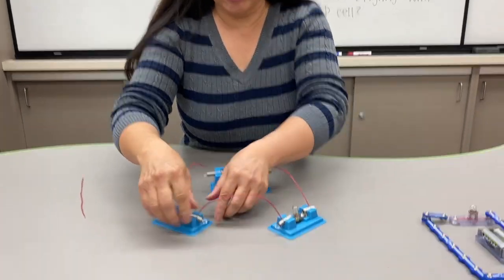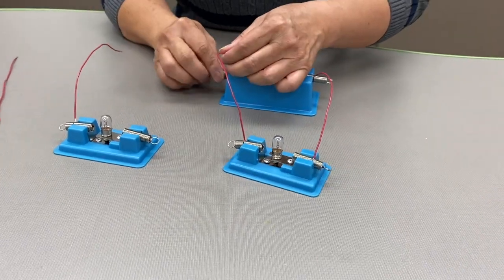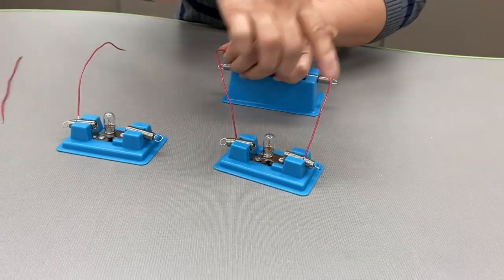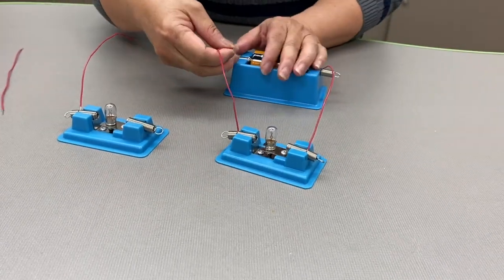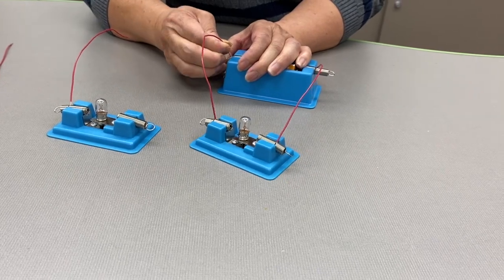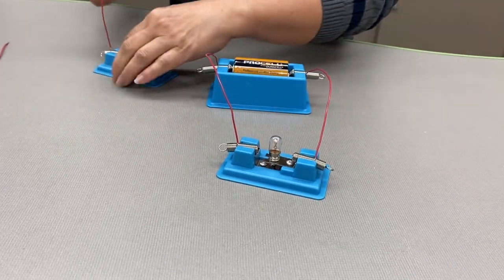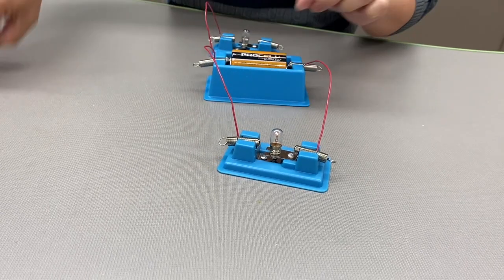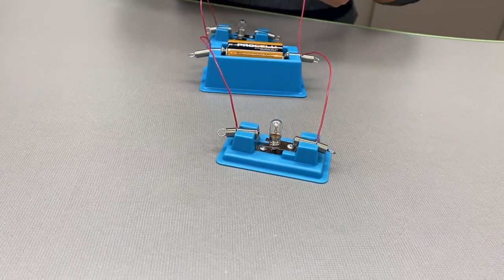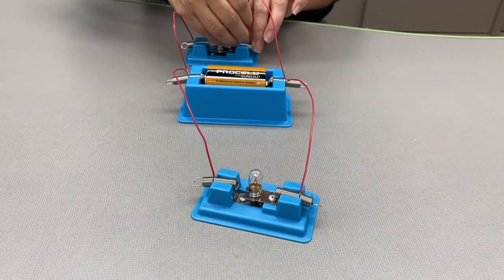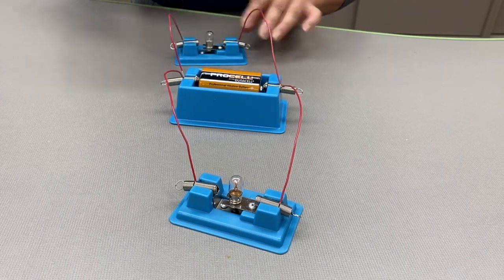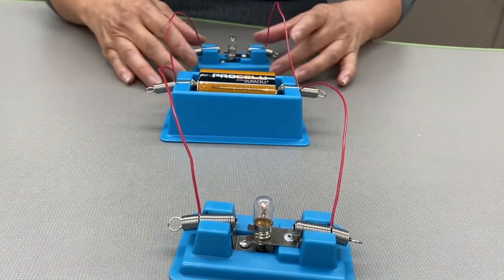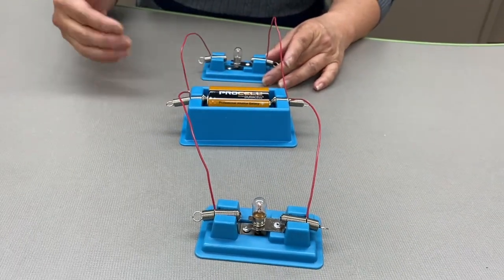So we're going to look at parallel circuits. That means that instead of a series where everything's in one big circle, we're going to make a parallel circuit where there's going to be two circles or the circuits are going to be parallel to one another. And here you see that it's still not very bright, but it's brighter than it was when it was in a series.